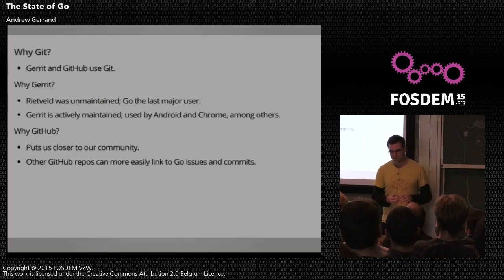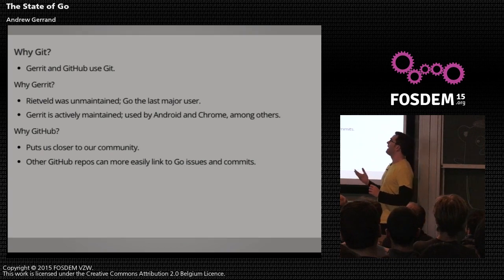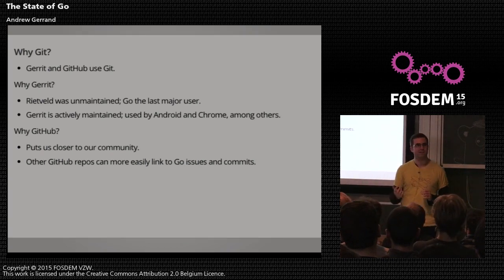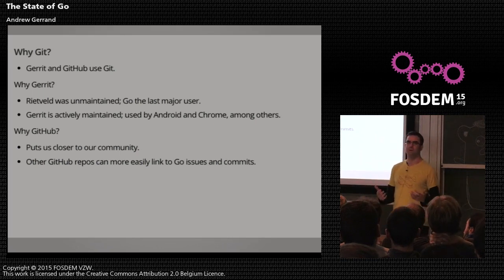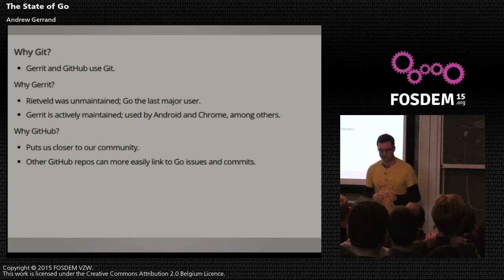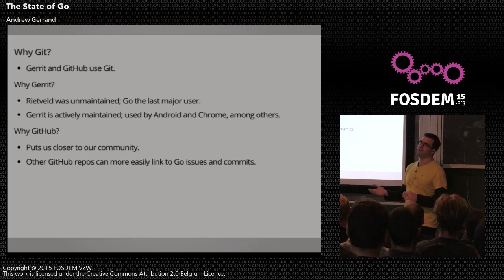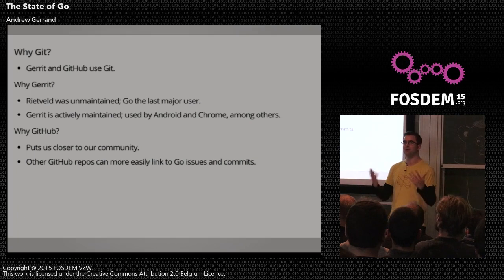Why did we move to Git? We needed to move to Gerrit, and Gerrit uses Git. Why Gerrit? Because Rietveld, the code review system we were using, was basically unmaintained. It used to be used by the Chrome project, but we were left holding the bag — the last people using it. So we switched to Gerrit, which has a team maintaining it and the infrastructure, and we joined large projects like Android and Chrome.